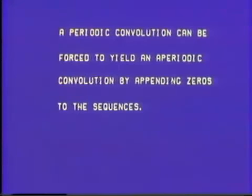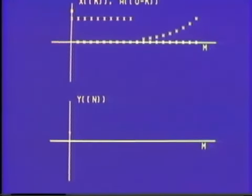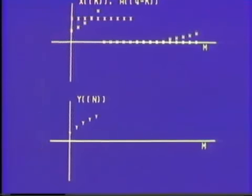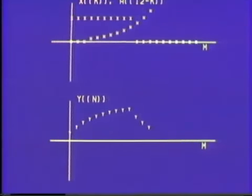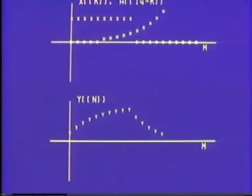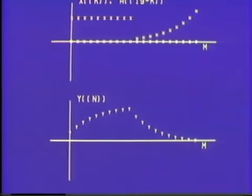Next, the film illustrates that the linear convolution can be obtained from a circular convolution by padding with zeros. We implement the circular convolution but x[k] is padded with zeros. As we do the circular shift of h, the values on the right are multiplied only by the appended zeros, so this looks exactly like sliding h in from the left. The resulting answer is exactly the same as the linear convolution of x[n] with h[n], even though we implemented a circular convolution.